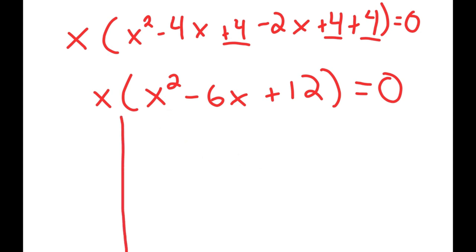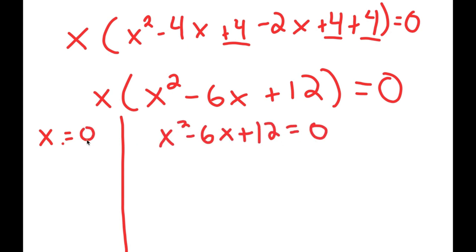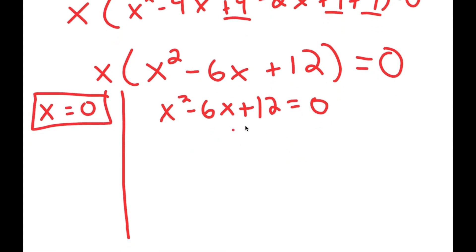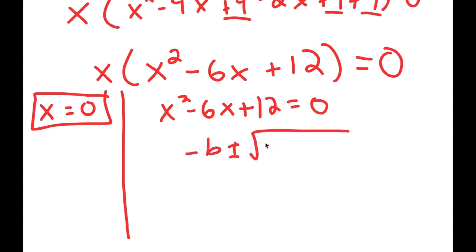From here, this gives me two equations. I get x is equal to 0, and I get x squared minus 6x plus 12 is equal to 0. To solve this, we're going to have to use the quadratic formula, which is negative b plus or minus the square root of b squared minus 4ac all over 2a.